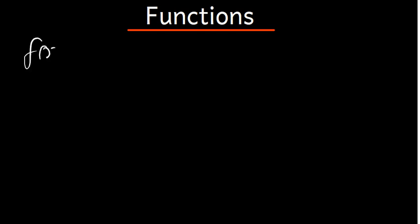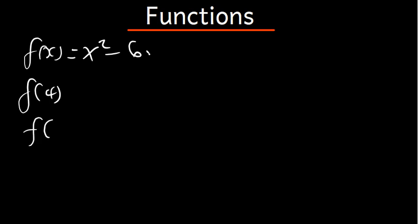Let's talk about functions. Let's say you have a function f of x equal to x squared minus 6. We have been told to find three things: first, f of 4; second, f of negative 4; and third, f of 2.